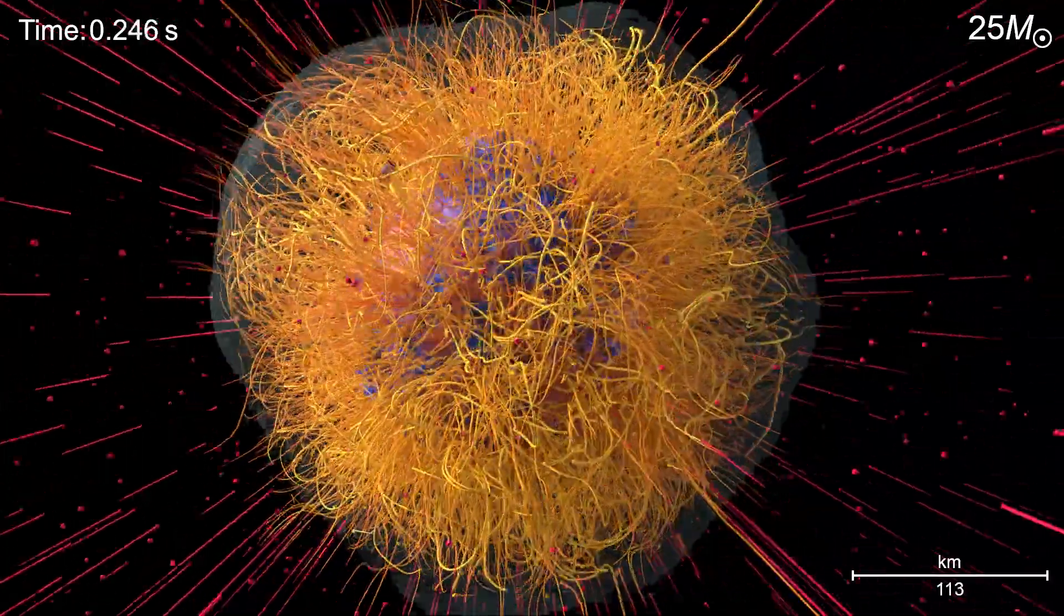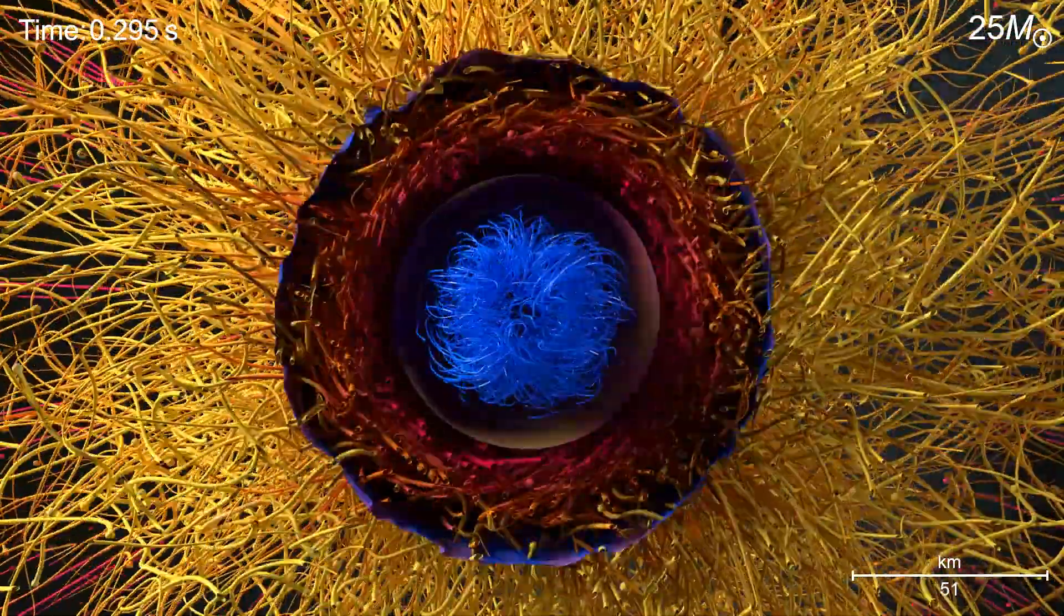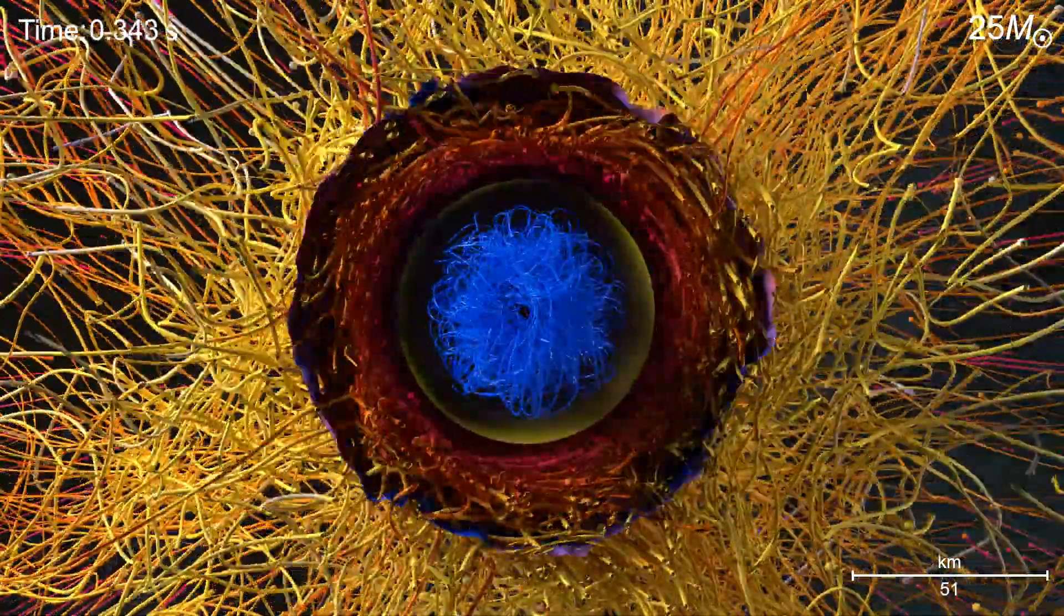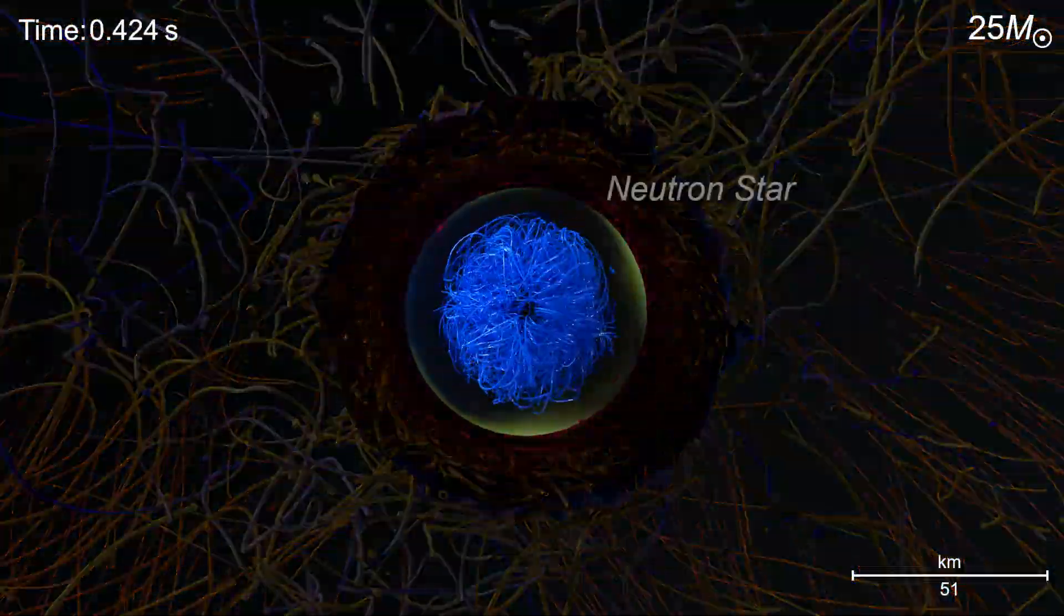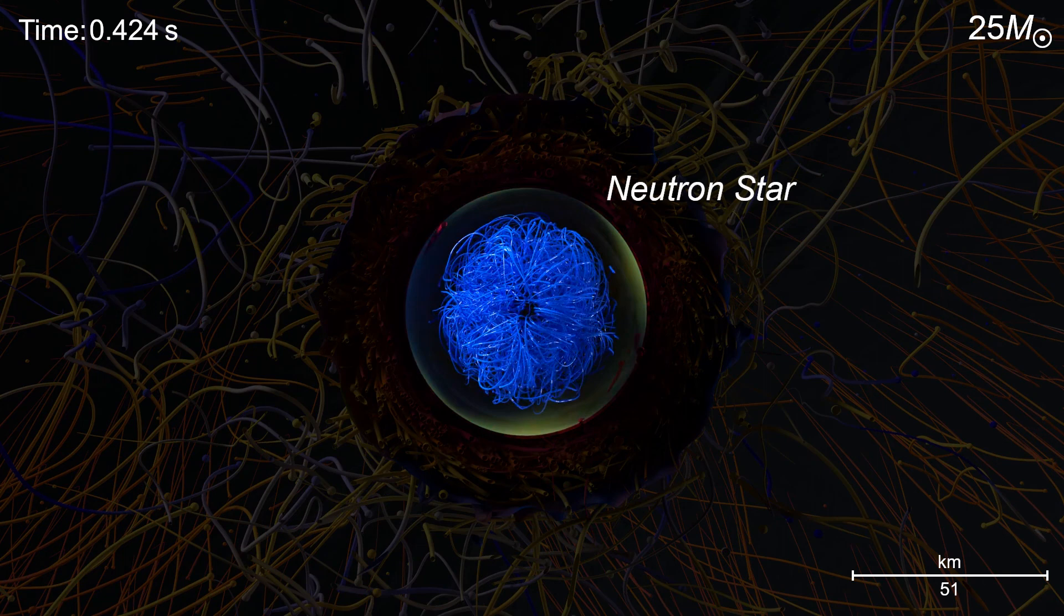As we zoom in and clip away the outer layers, we reveal an inner surface which bounds the central core that will shrink and cool and be left behind. This is the neutron star at birth. There are at least 100 million such neutron stars in the galaxy.